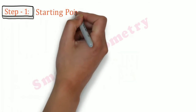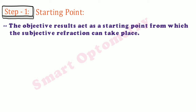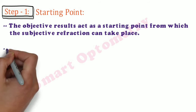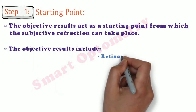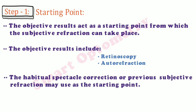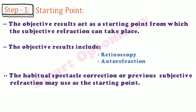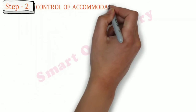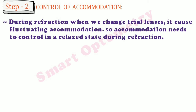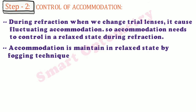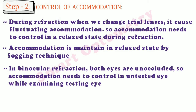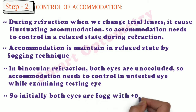Step-by-step procedure for subjective binocular refraction. Step 1 — Starting Point: the objective results, including retinoscopy and autorefraction, act as the starting point. The habitual spectacle correction or previous subjective refraction may also be used. Step 2 — Control of Accommodation: during refraction, changing trial lenses causes fluctuating accommodation, so accommodation needs to be maintained in a relaxed state by the fogging technique. In binocular refraction, both eyes are unoccluded, so accommodation in the untested eye must be controlled while examining the tested eye. Initially, both eyes are fogged with +0.75 diopter spherical.